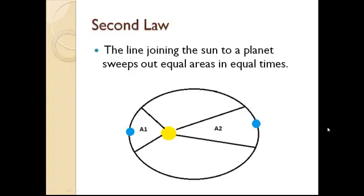The second law states that the line joining the Sun to a planet sweeps out equal areas in equal times. This means that if the time it takes for the planet to go from position A to position B is equal to the time it takes from position C to position D, both areas A1 and A2 will be equal.